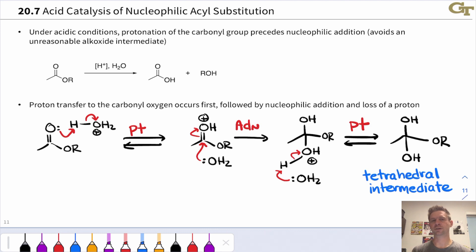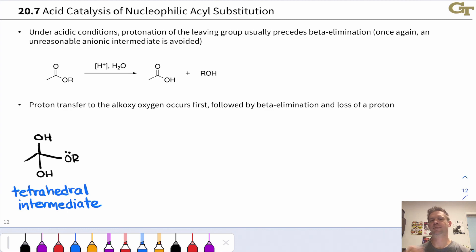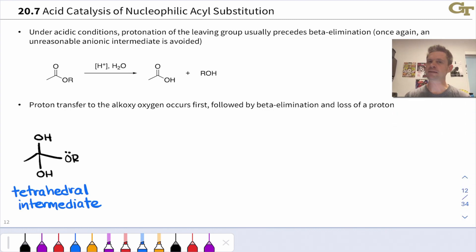we'll see this tetrahedral intermediate undergo acid-catalyzed beta elimination of the alcohol leaving group. This acid-catalyzed beta elimination follows this same mechanistic pattern. Proton goes on, the beta elimination occurs,